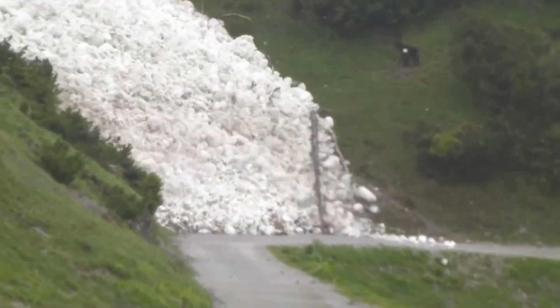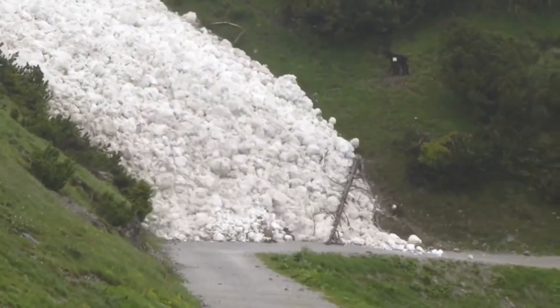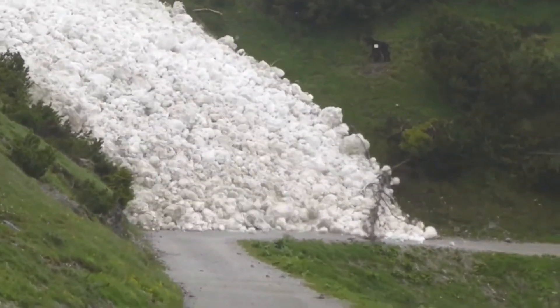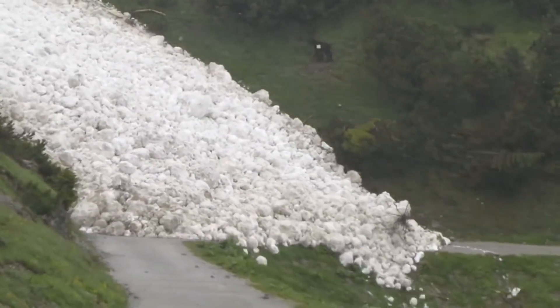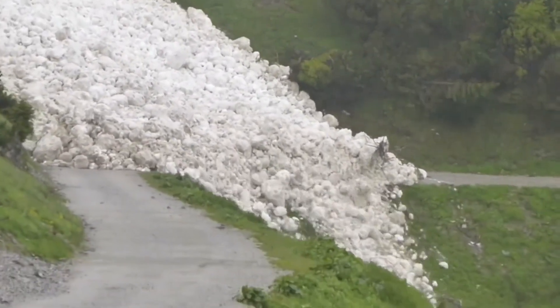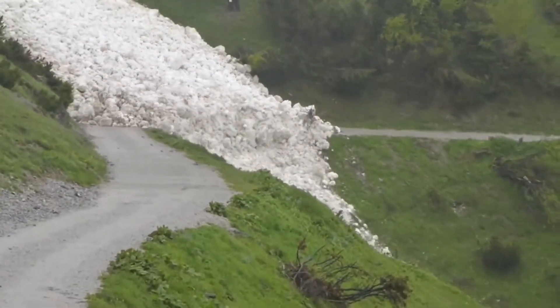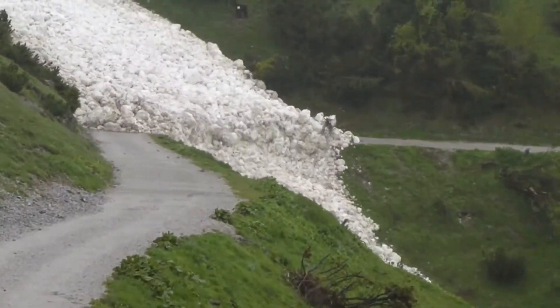This large wet avalanche is relatively slow. The flow consists of rounded lumps that are larger than are typical of granular flow. Although slow, this massive avalanche could destroy a large truck, so it is a size 4.